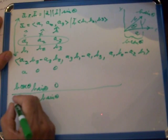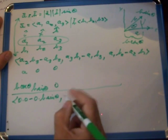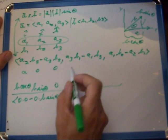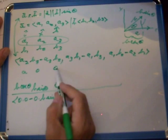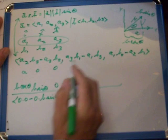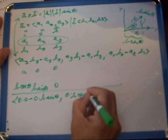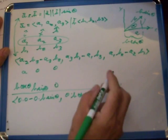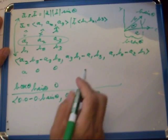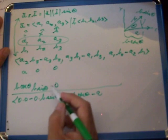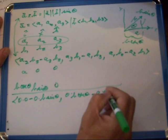That is the first coordinate. And the second one is A3, which is zero, times B1, which is B cos theta, minus A1, which is A, times B3, which is zero. Comma.